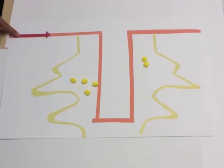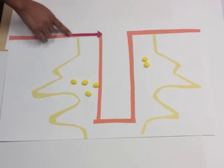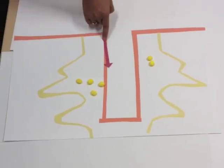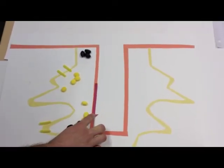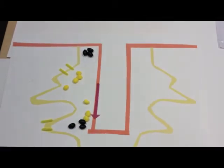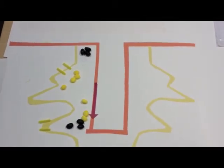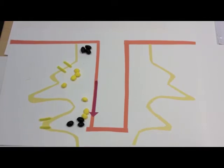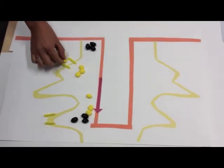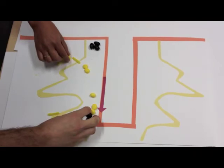The action potential continues down the sarcolemma where it enters the T-tubule. Once the action potential has entered the T-tubule, calcium ions are released from the terminal cisternae of the sarcoplasmic reticulum, where the calcium ions have been stored by the molecule calsequestrin.